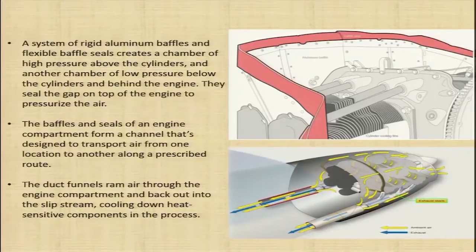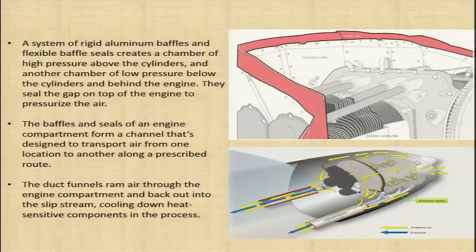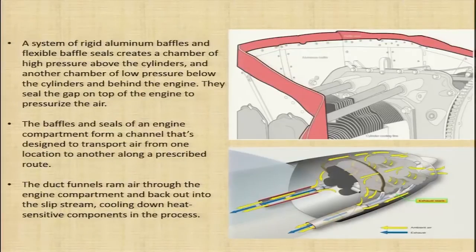As you can see in the diagram, ambient air comes from the front — shown by the yellow arrows — is channelized through the engine, extracts heat, and the warm exhaust air goes out of the system. The air follows a prescribed route so that ambient air enters, extracts heat from the engine, and is sent overboard.